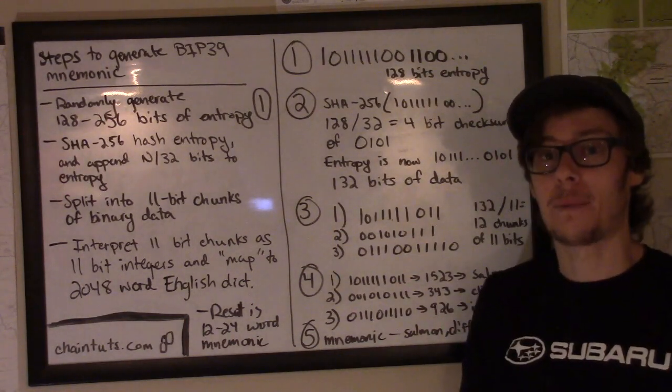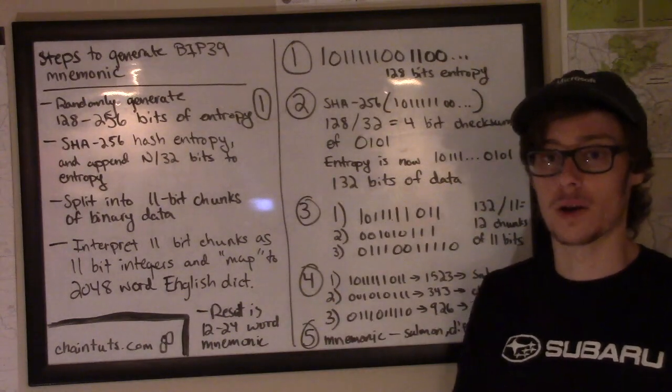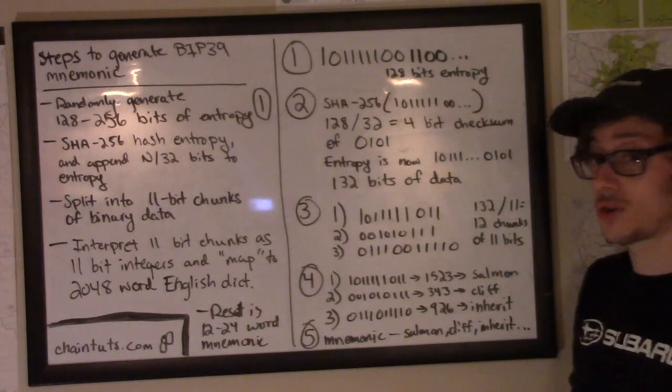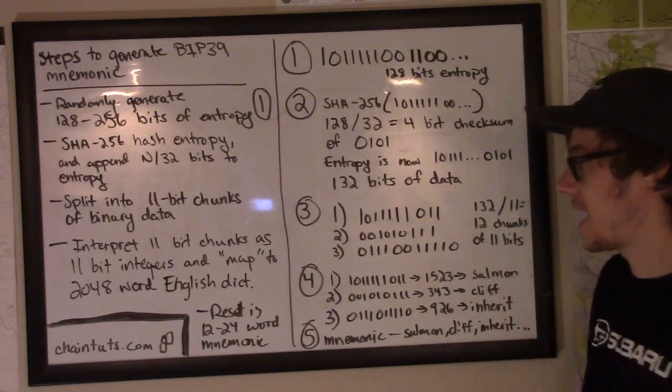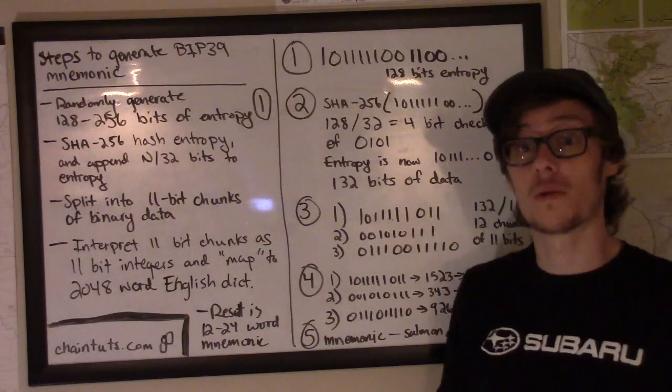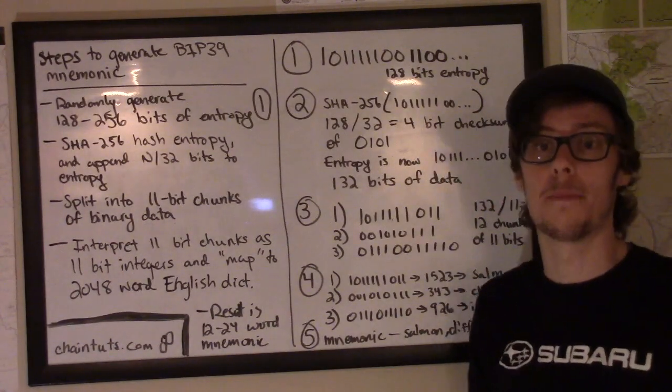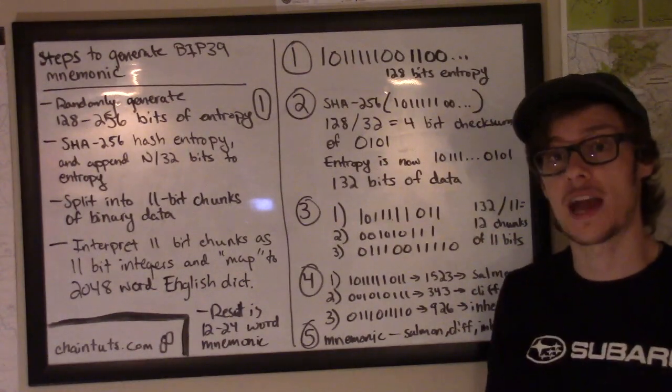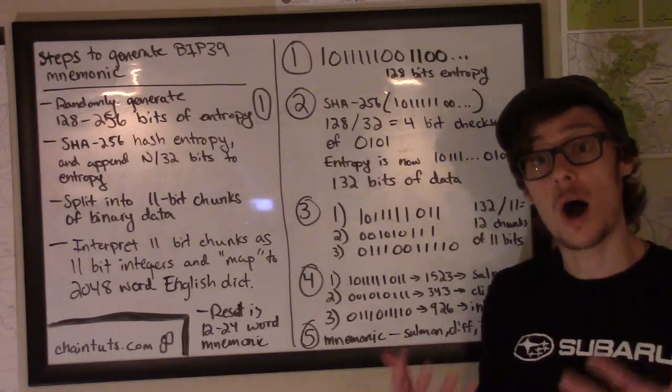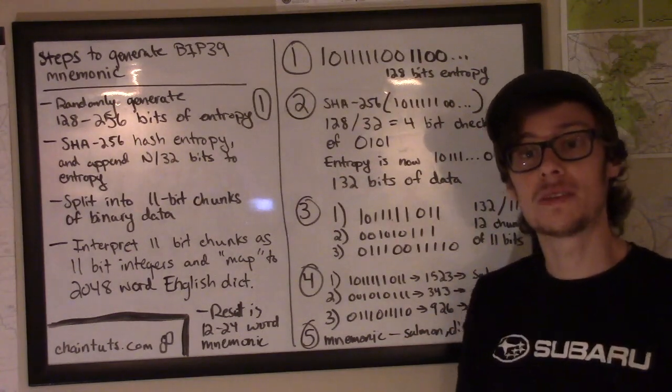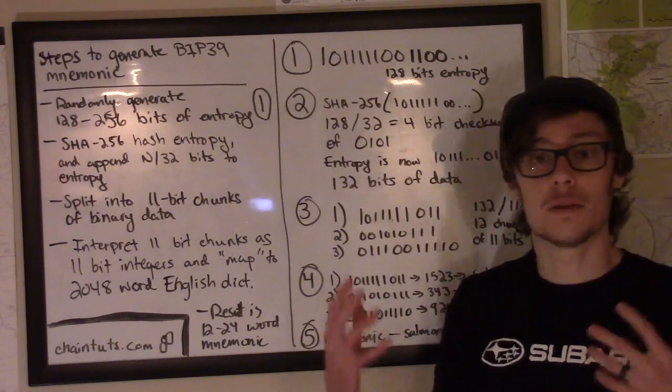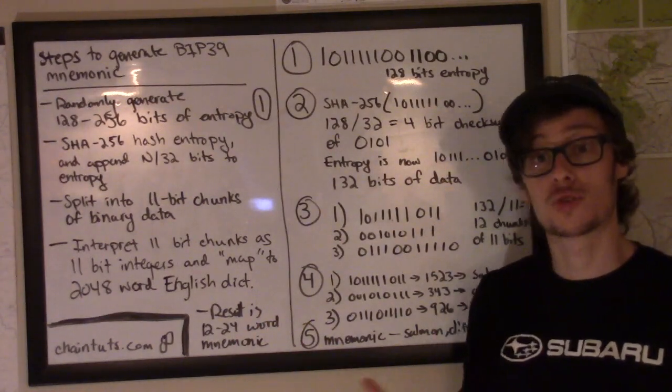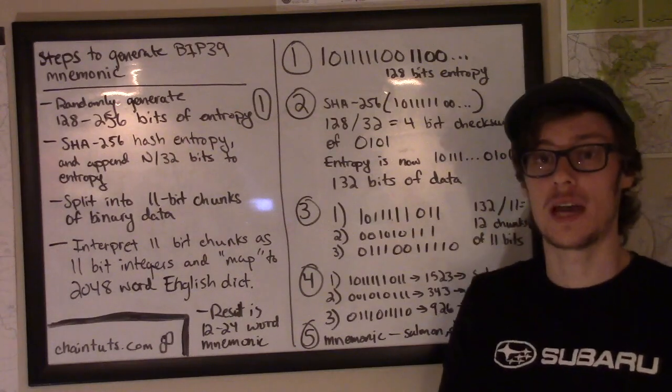So by using this dictionary map of 2048 words, we can generate a 12 to 24 word mnemonic. Our example starts off with the three words salmon, cliff, and inherit. Now it's important to remember that as part of a standard that's implemented by many different wallet technologies, the BIP39 mnemonic dictionary is always the same 2048 words, always in that same order. So you can look up this dictionary in any wallet that implements this and in the BIP39 standard itself if you look at the source code for different Bitcoin, Bitcoin Cash implementations.